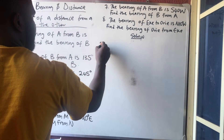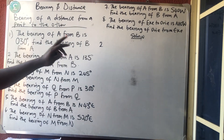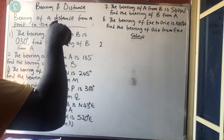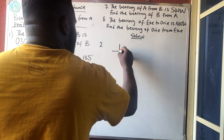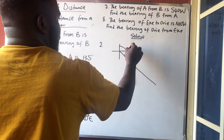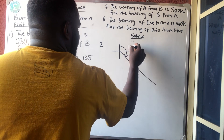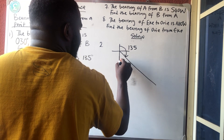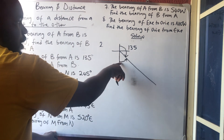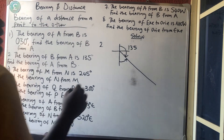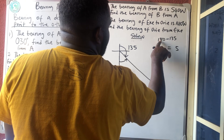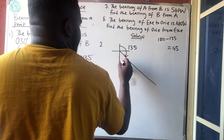Number two. They say that the bearing of B from A is 135. 135 will enter in the second quadrant, so we draw it here. We always need the smallest or acute angle that the horizontal makes with the line you draw. So how do you get it? You know that from here to here is 180. So 180 minus 135 equals 45. So here is 45 degrees.